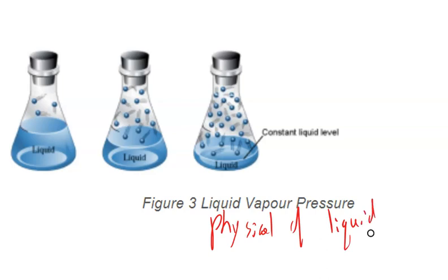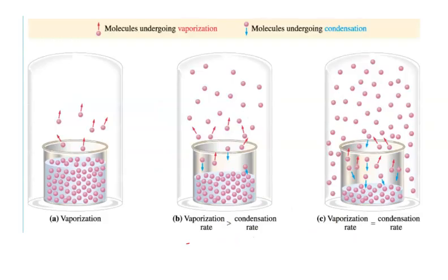Vapor pressure is a measure — relative or quantitative — of how much a liquid wants to go into a gas state. If you put water on your hands it feels wet. If you put alcohol on your hands it feels cool and evaporates quickly — it has a higher vapor pressure than water. If you put acetone on your hands it evaporates really fast. Its particles are not very sticky to each other in terms of intermolecular forces, so it tends to go into the gas state quickly, meaning its vapor pressure is higher.